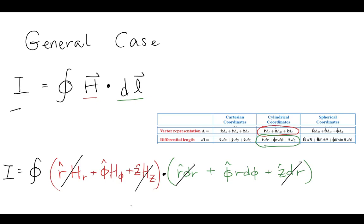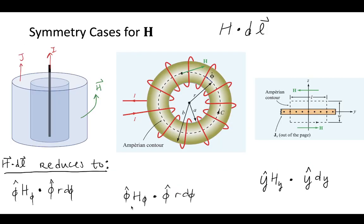Now this could be done for some other cases, but it really only works for these very simple symmetric cases, and there's only a few of them. So these are the main symmetry cases where we're able to be very clever about taking this H dot dl integral.